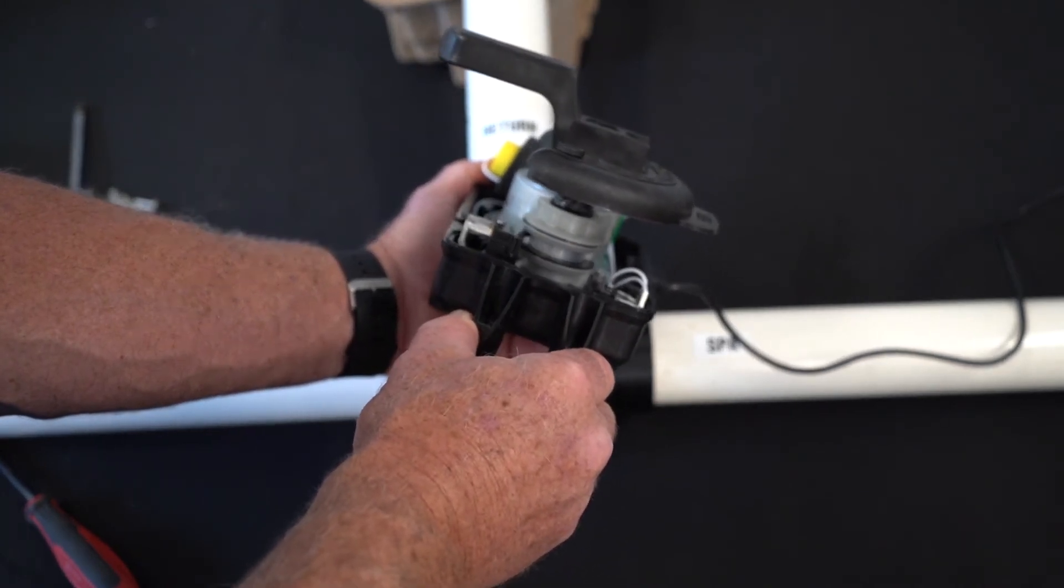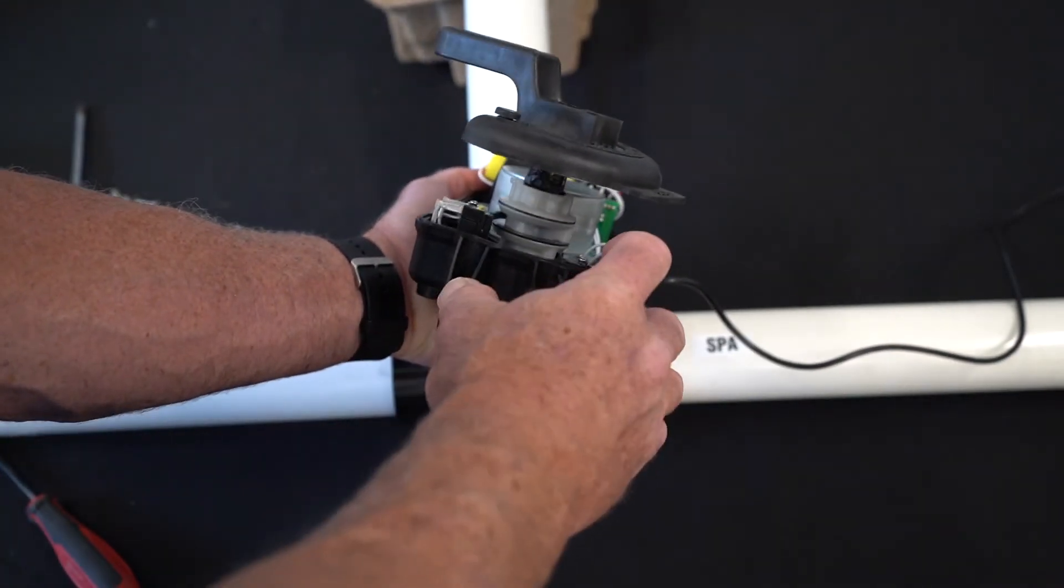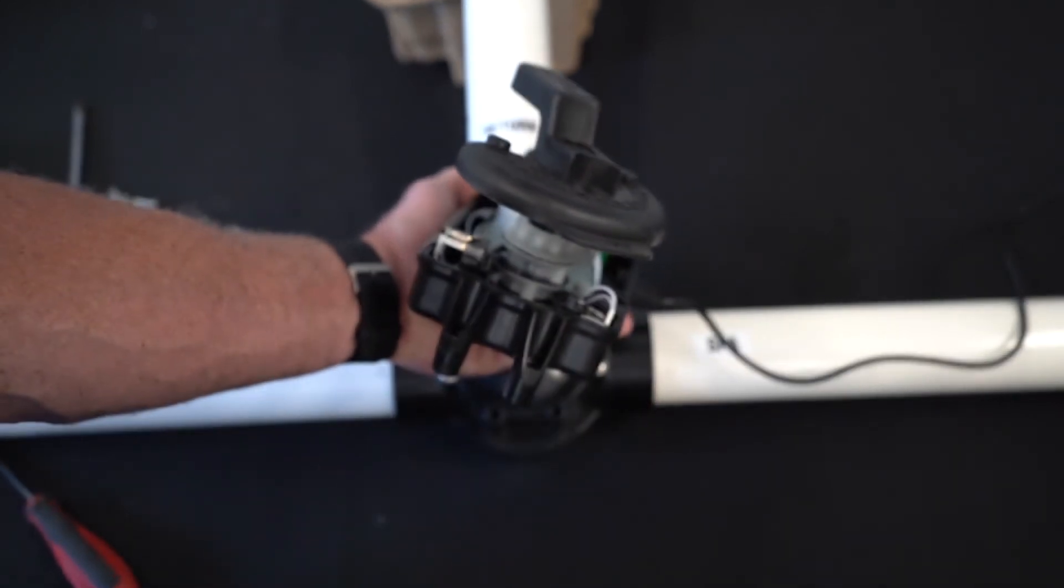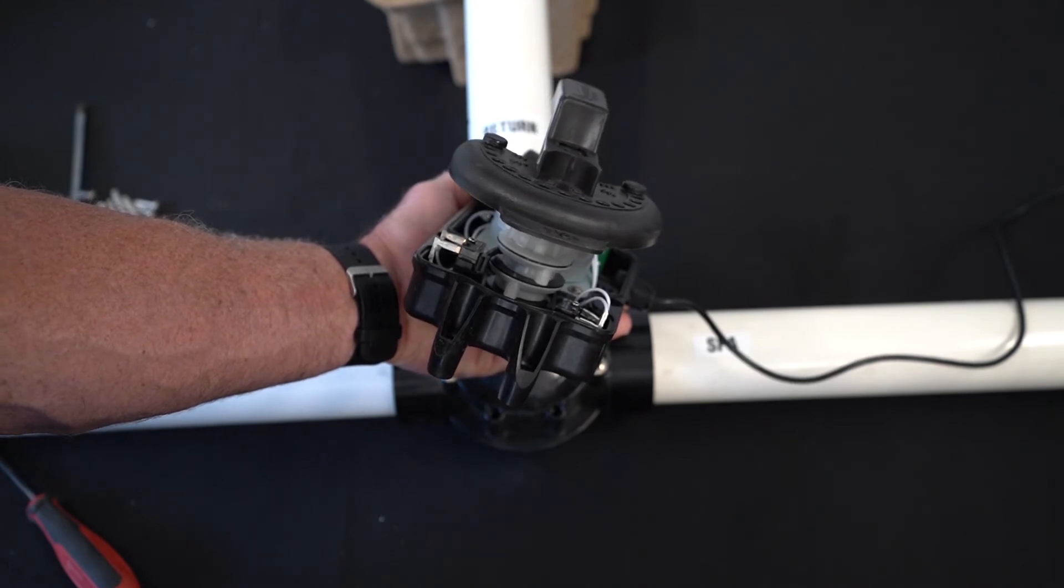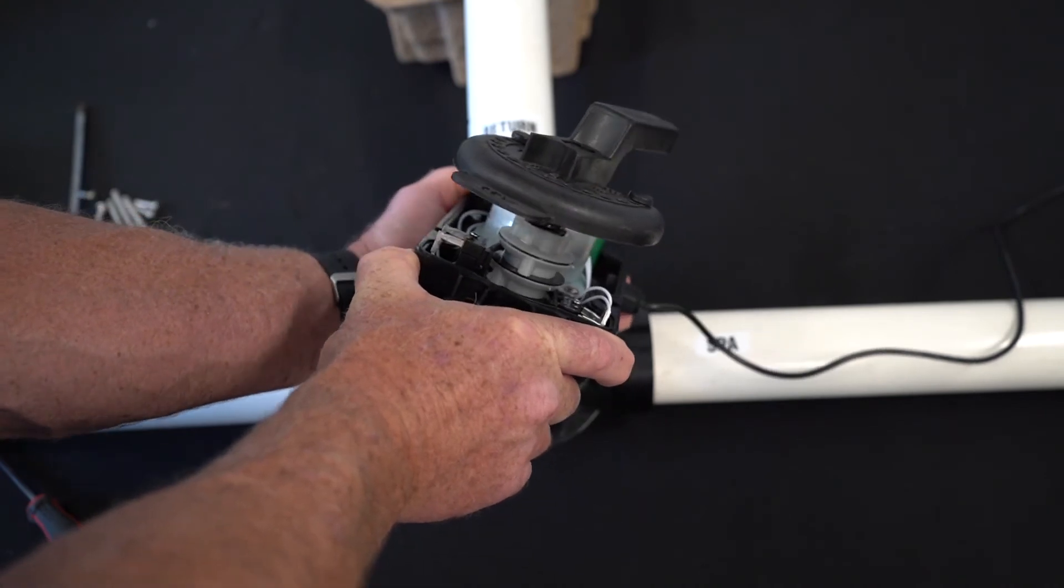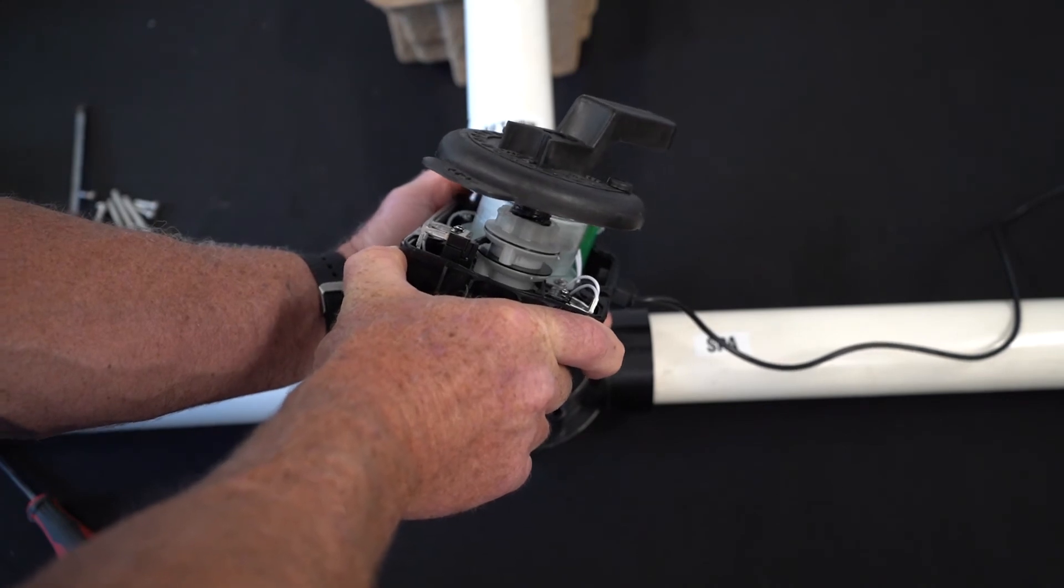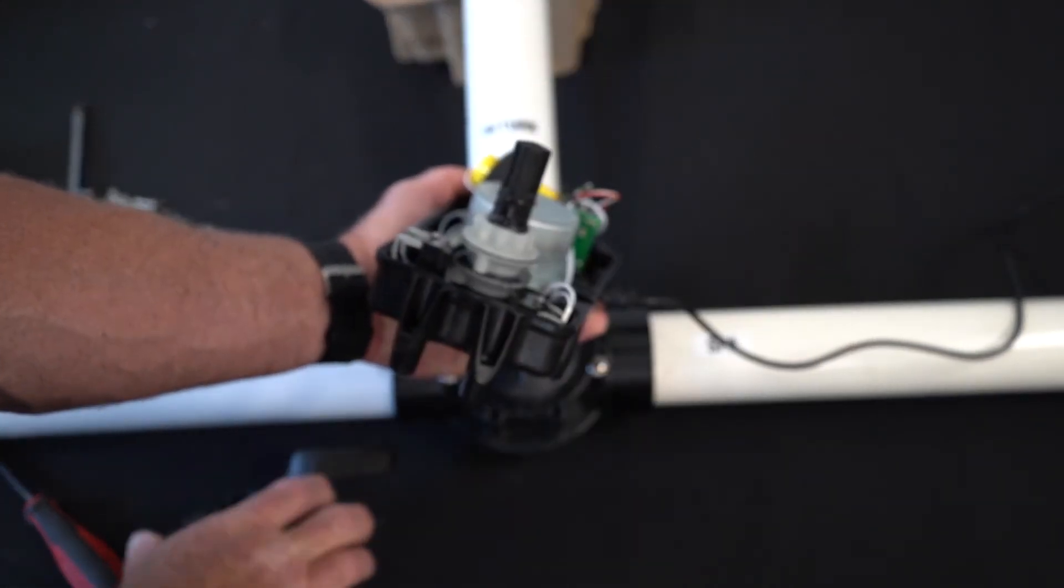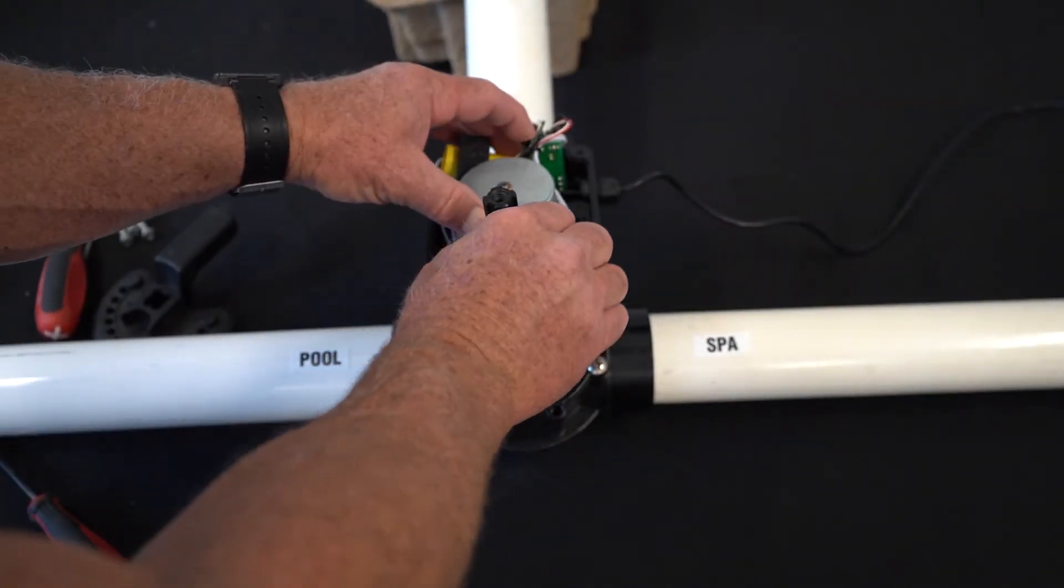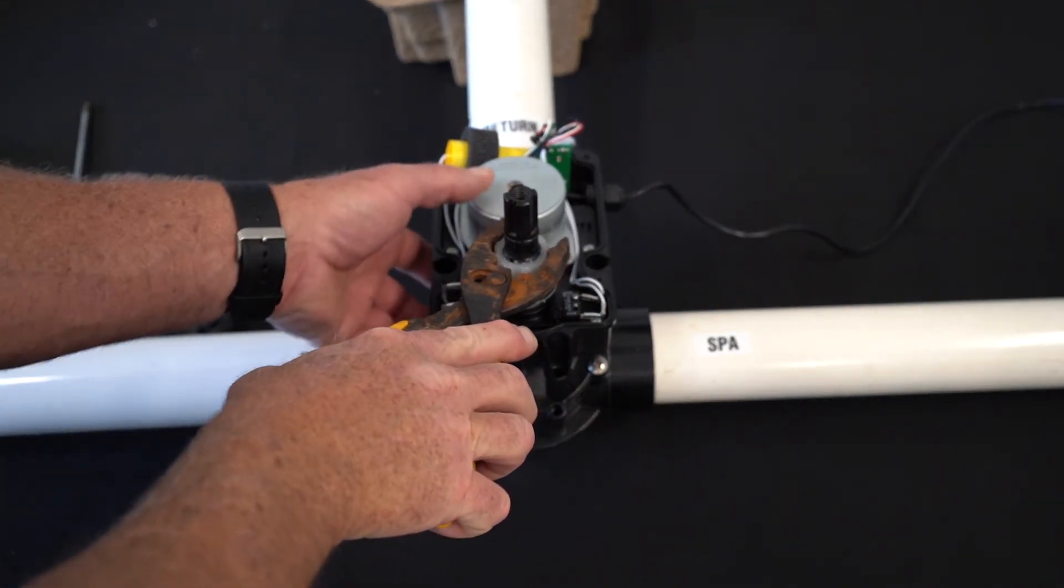So we're going to want to set this cam up so that it shuts off the micro switch on this side much sooner than it came out of the box. And the way that we're going to do that is by adjusting that cam. So we go to the position that we approximately want. We're going to now come in and loosen up this nut right there. You will need to do that with a pair of pliers.